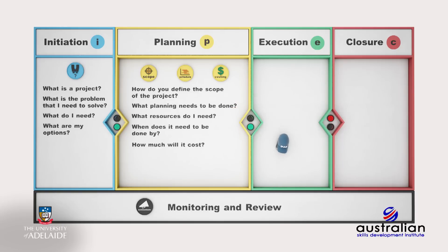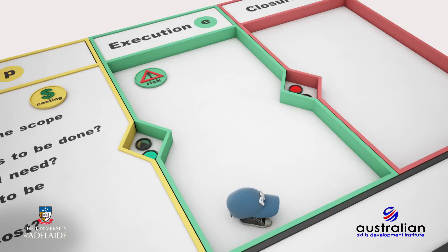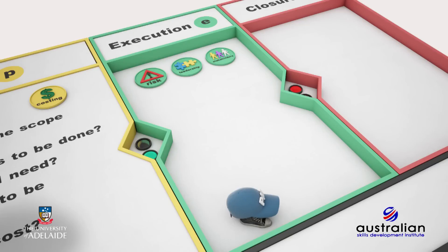Execution means that you are now ready to roll out or implement your project. To execute your project effectively, you will need to identify, assess and deal with risk or any uncertainty that may present itself. In addition, you will need to lead your team to enable the execution of the project if you want it to run smoothly. To achieve this, you will need to clearly communicate the objectives of the project and manage change. Engaging stakeholders and managing expectations is all part and parcel of the ongoing journey.